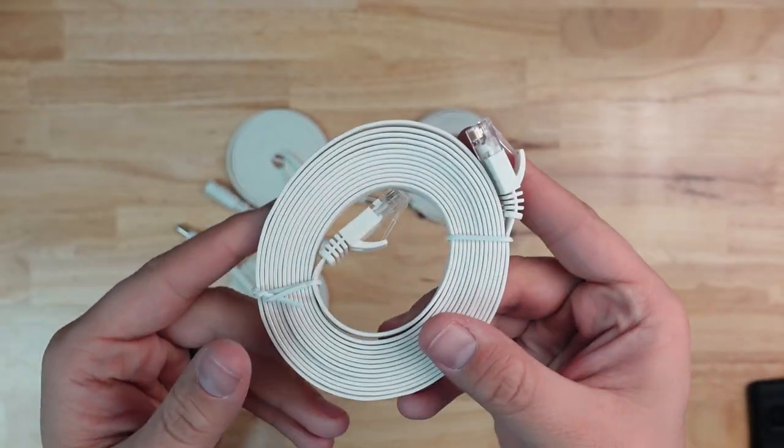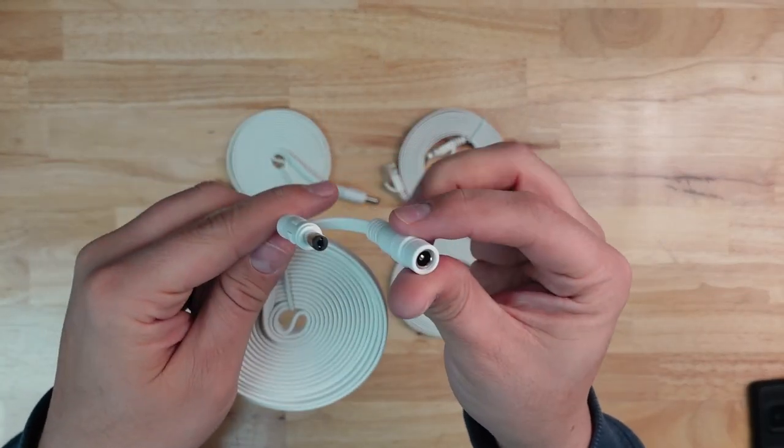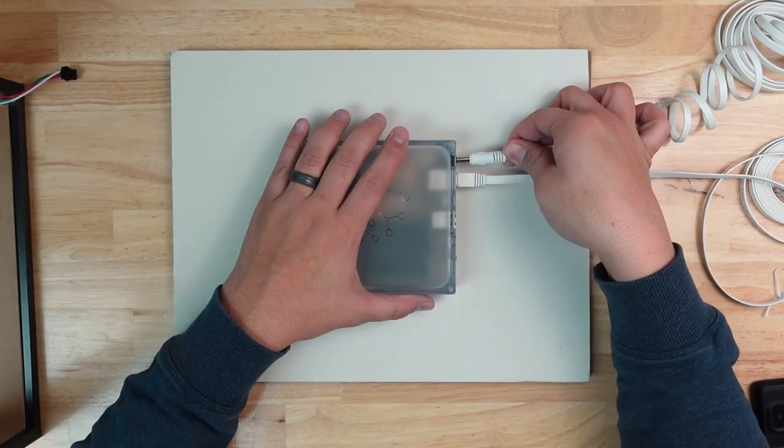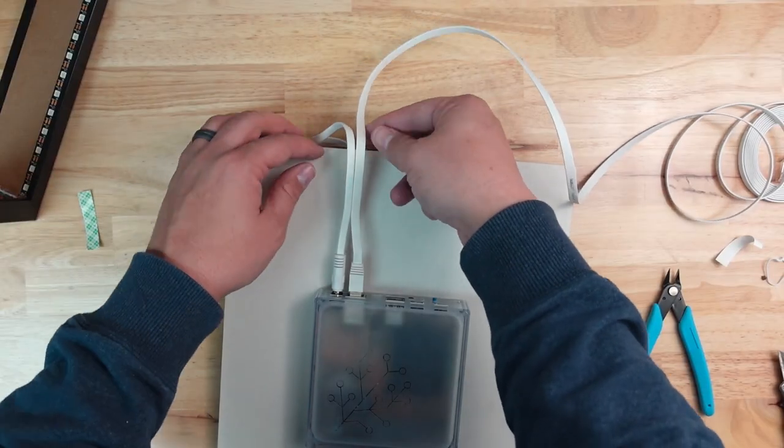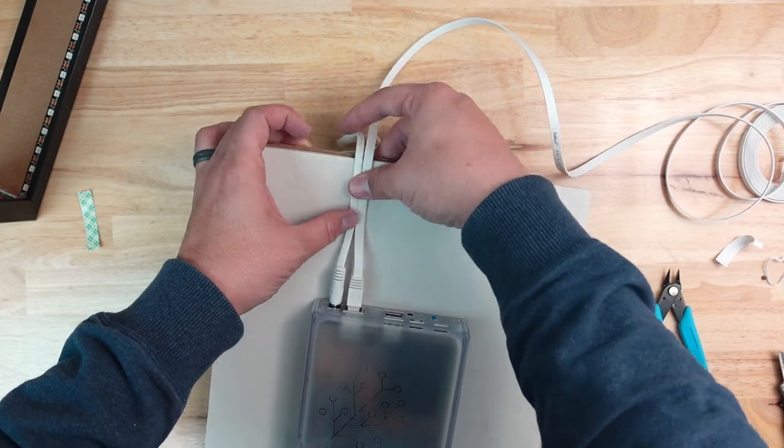Since I didn't buy the PoE power over ethernet version of the home assistant yellow I'm going to have to connect both ethernet and power to this thing and I want to make it look good. To do that I used a flat white cat 6 cable and a flat white DC power cable, connecting them to the yellow and then running them up the backer and around behind it. This made things really neat and tidy as you can see and actually stuck the two cables to the backer with a little bit of scotch double-sided sticky pads.